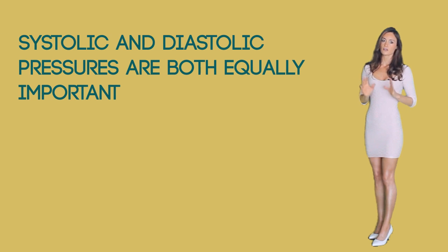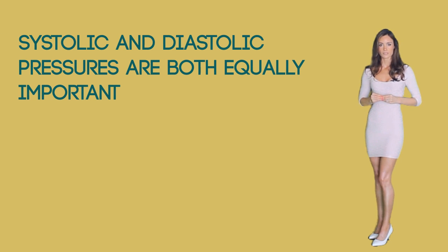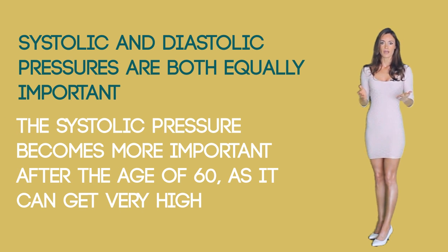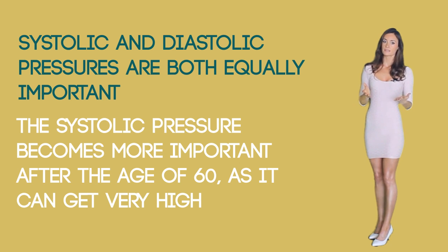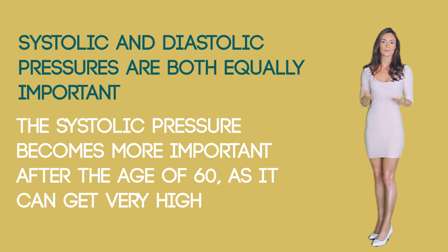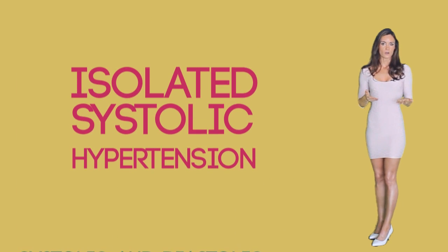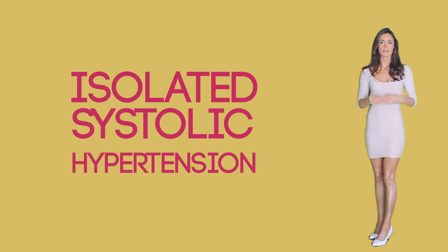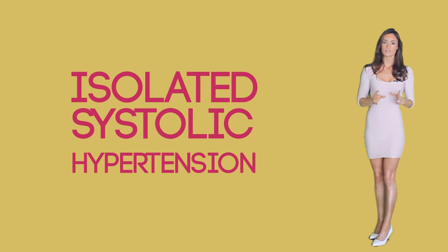Systolic and diastolic pressures are both equally important. However, the systolic pressure becomes more important after the age of 60. It can get very high even when the diastolic pressure is normal. For example, a diastolic pressure may be less than 90 while a systolic pressure could be greater than 140. This is known as isolated systolic hypertension and is generally observed in older patients because there is loss of elasticity of the arteries in older people.